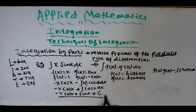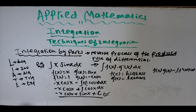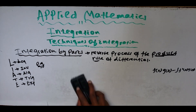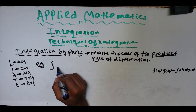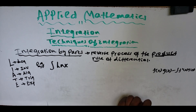We add plus constant C because this is an indefinite integral. I talked about indefinite integrals in the previous video — if you haven't watched it, please go back and watch it. So the final answer is −x cos(x) + sin(x) + C. Now let me take another example: the integral of ln(x).